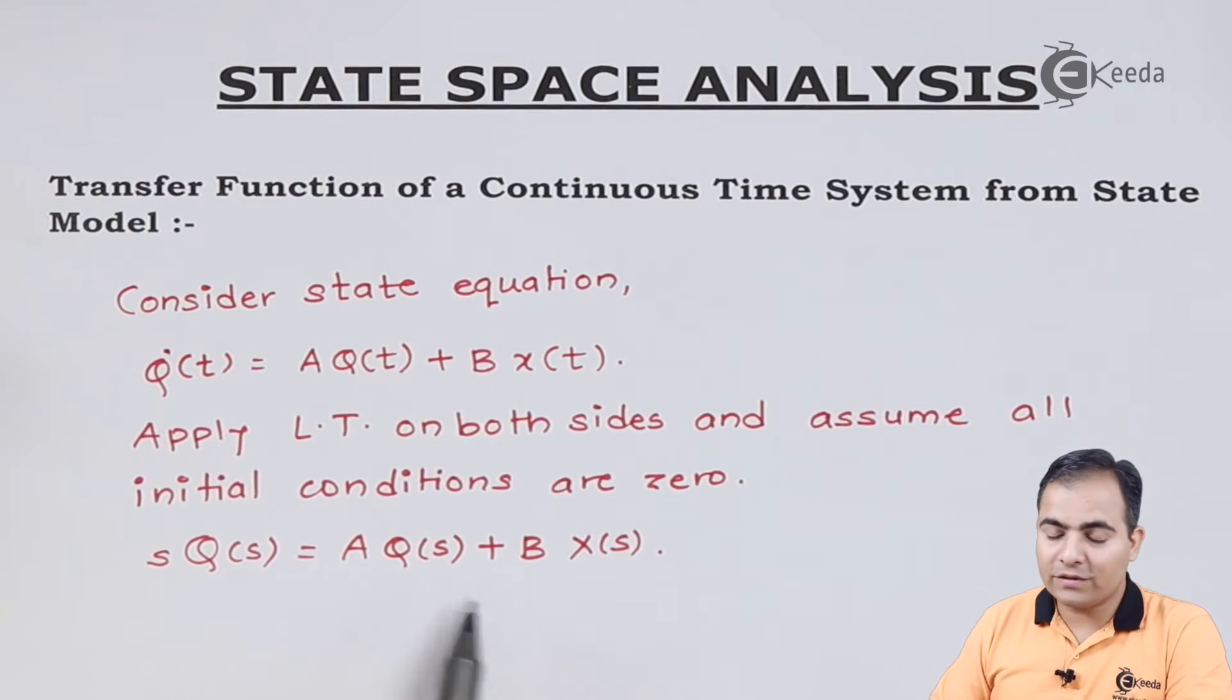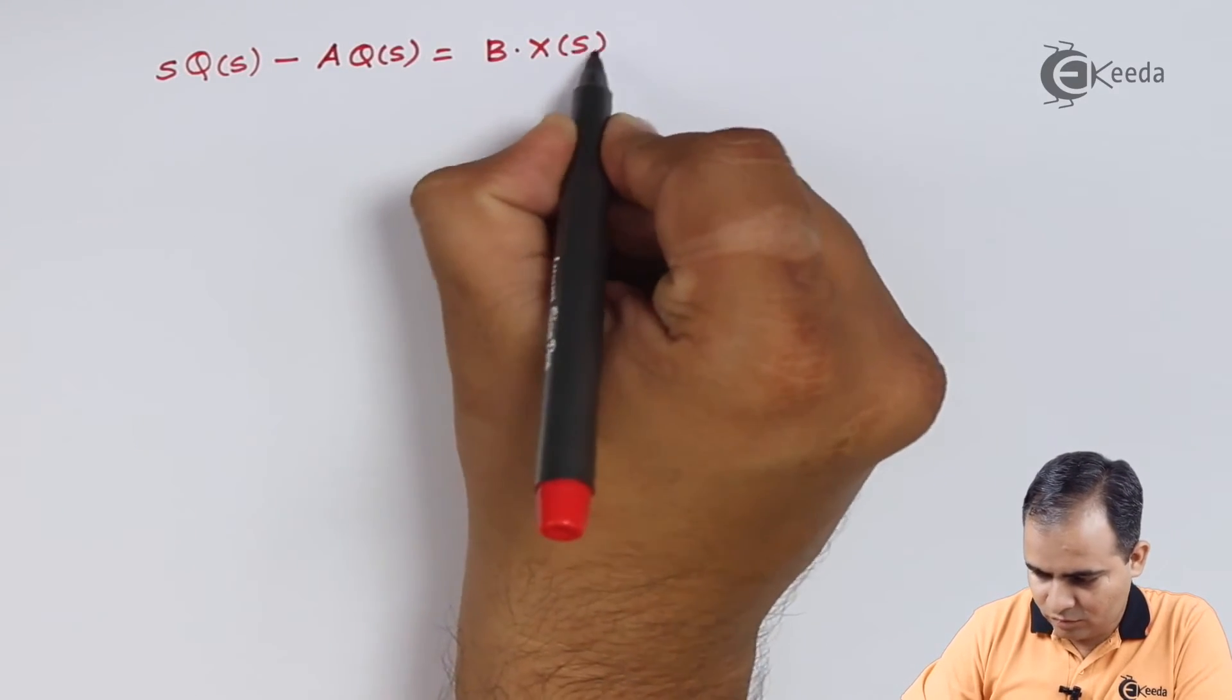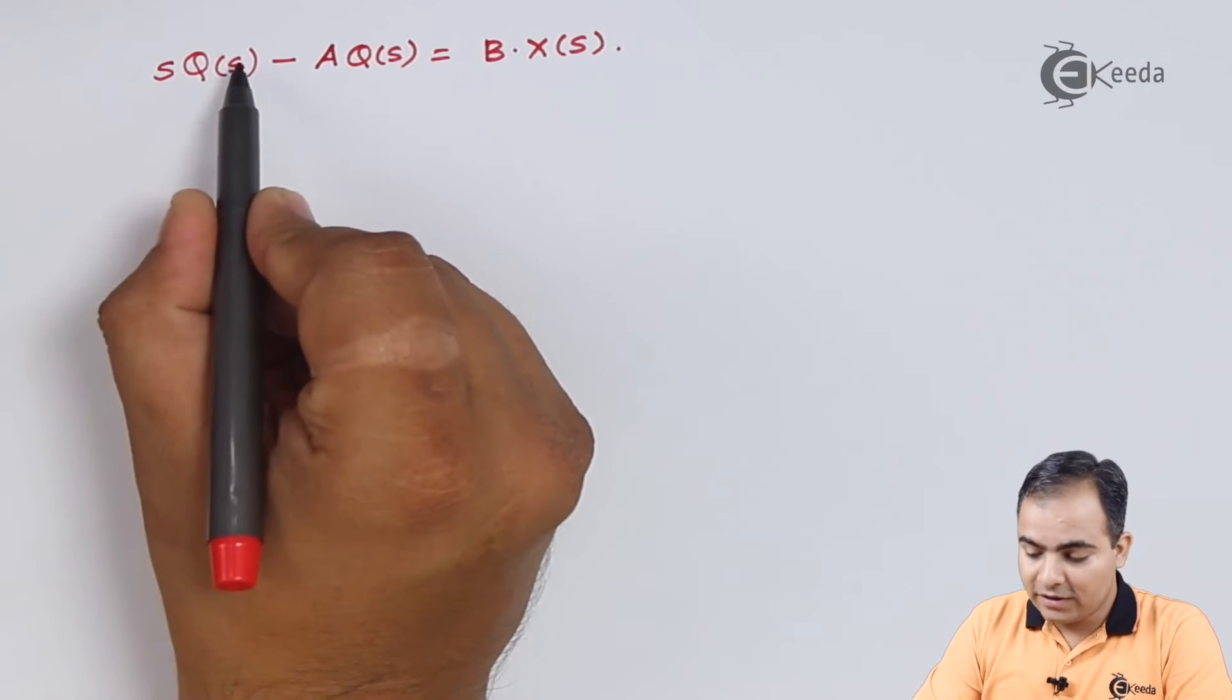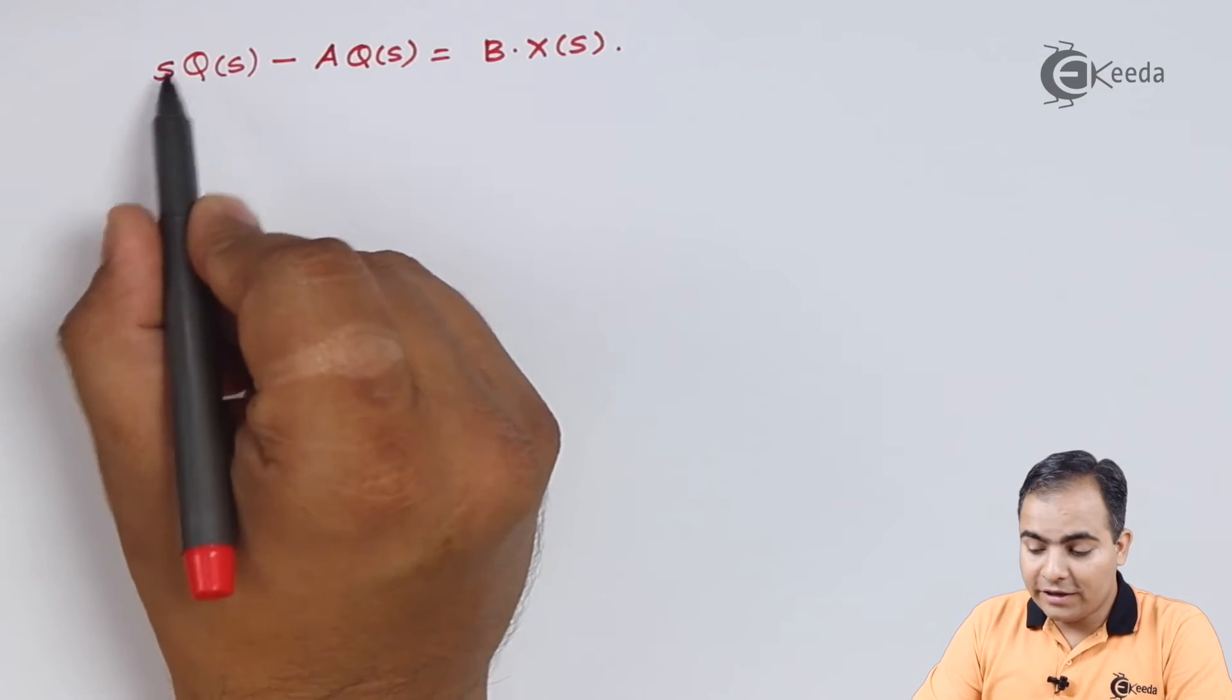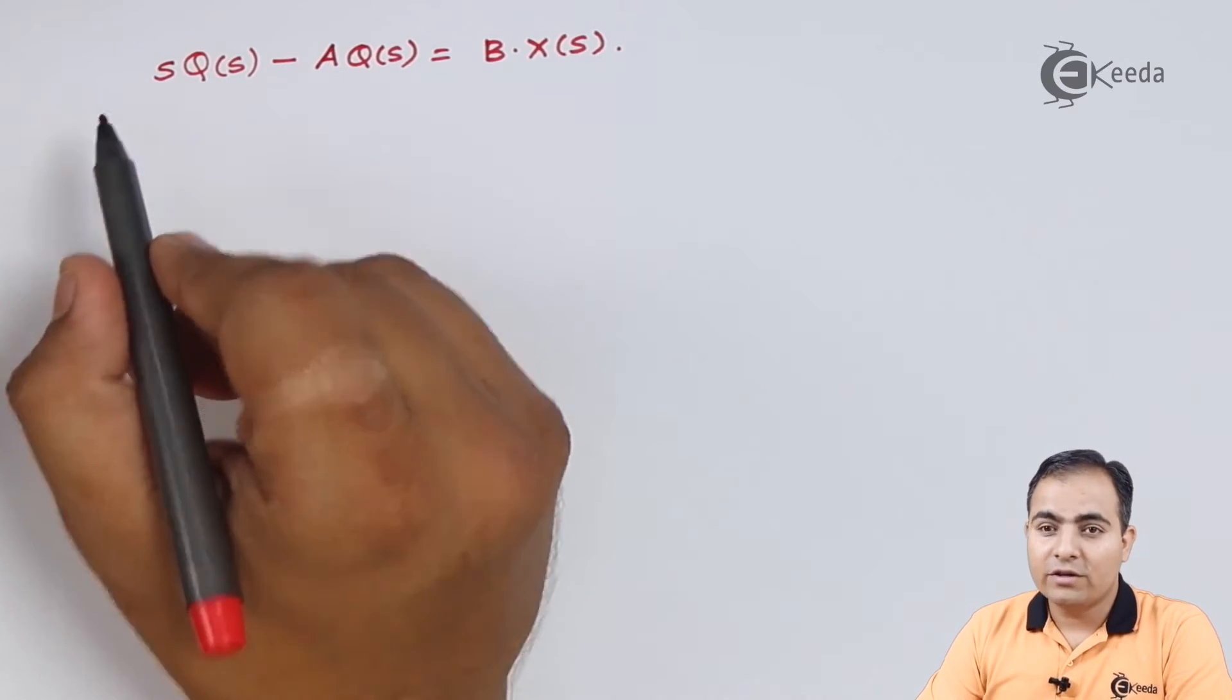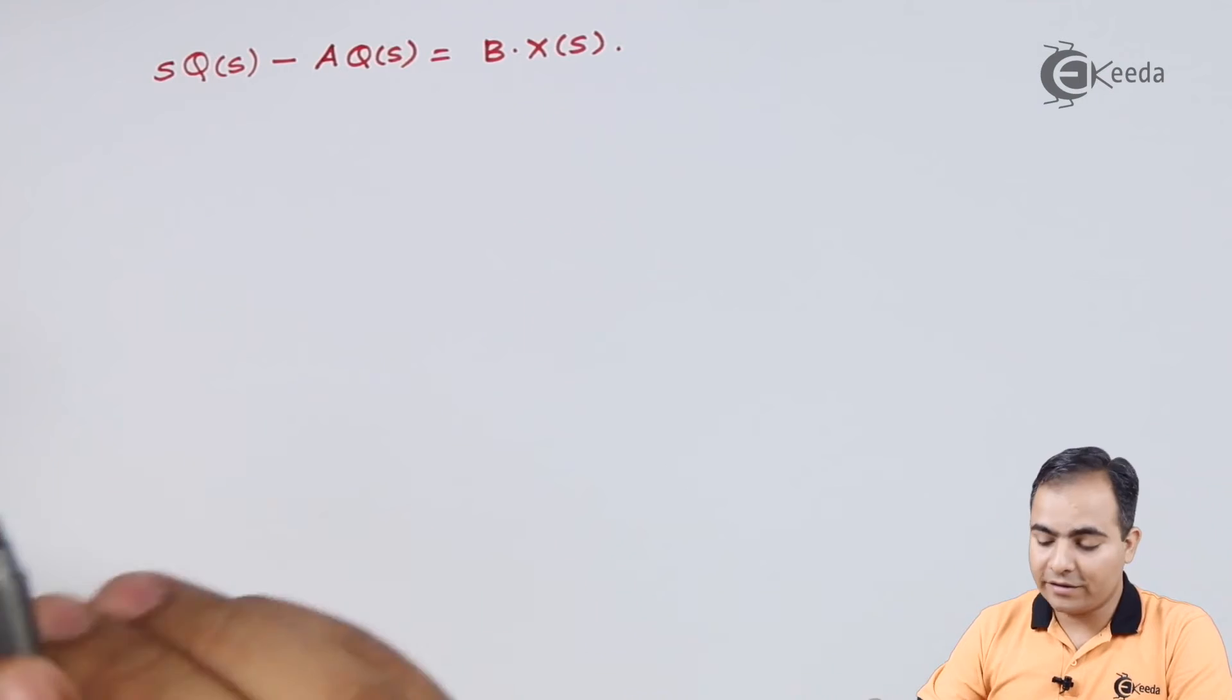Now I will shift this Q of s on left hand side and then I will take Q of s common. From left hand side I will take Q of s common. But look at here, if I take Q of s common then this place is replaced by 1. Basically the Q of s is the state vector matrix and the determinant of this matrix should be 1 if I take it outside. So what I am going to consider if I want to replace it by 1 then I am going to consider here we have identity or unity matrix.